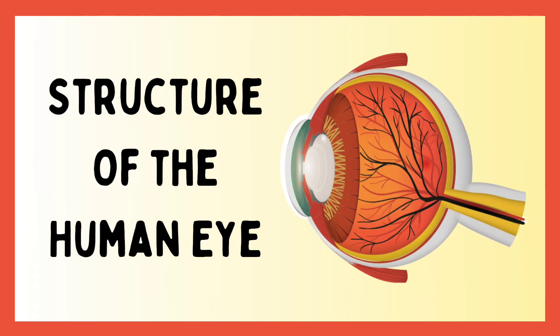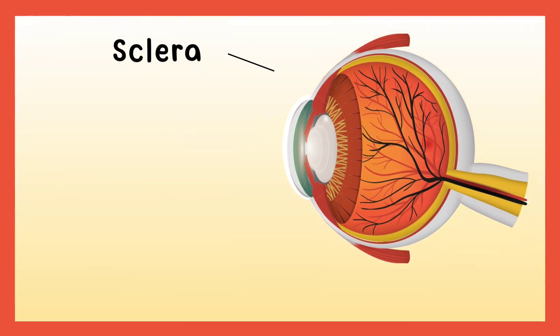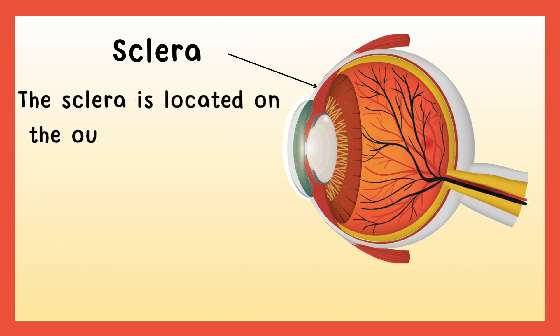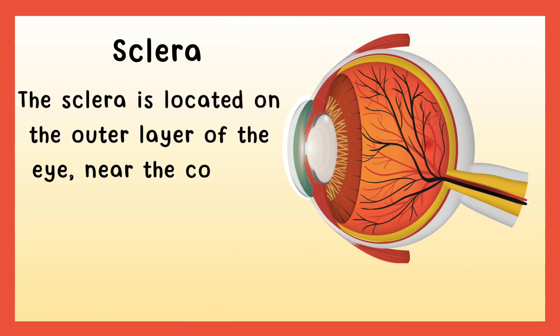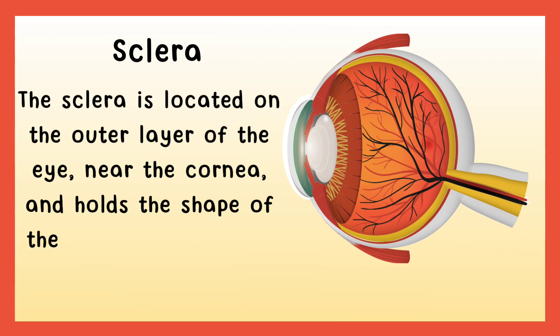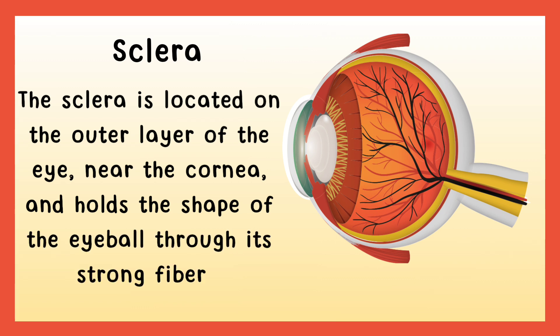Today's lecture is Structure of Human Eye. The sclera is located on the outer layer of the eye, near the cornea, and holds the shape of the eyeball through its strong fiber.